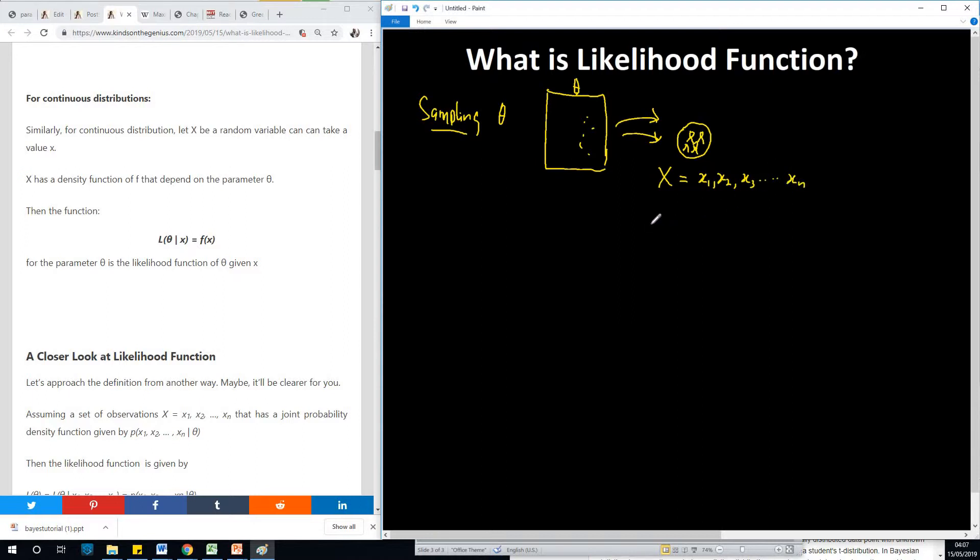So the likelihood function is simply the function, normally represented as L, the function of this parameter θ given your values, the values you have. So you have x1, x2 all the way to xn.